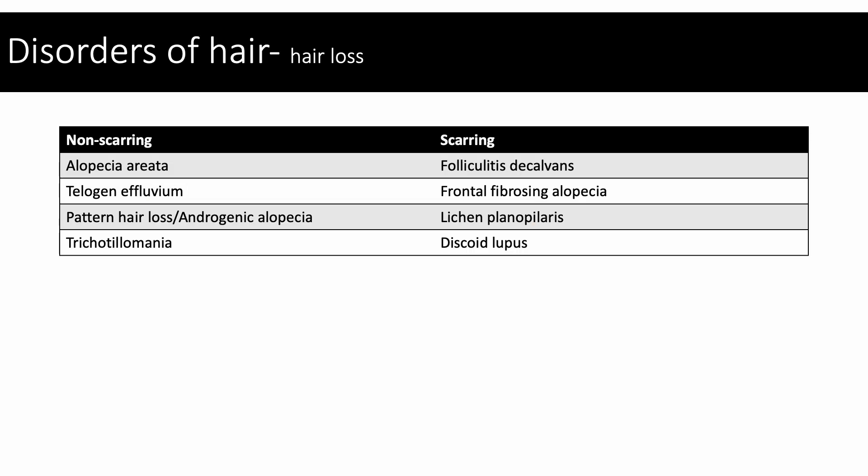Disorders of hair leading to hair loss can be divided into two types: non-scarring and scarring. Examples of non-scarring alopecias include alopecia areata, telogen effluvium, pattern hair loss also known as androgenic alopecia, and trichotillomania. Disorders of scarring include folliculitis decalvans, frontal fibrosing alopecia, lichen planopilaris, and discoid lupus.